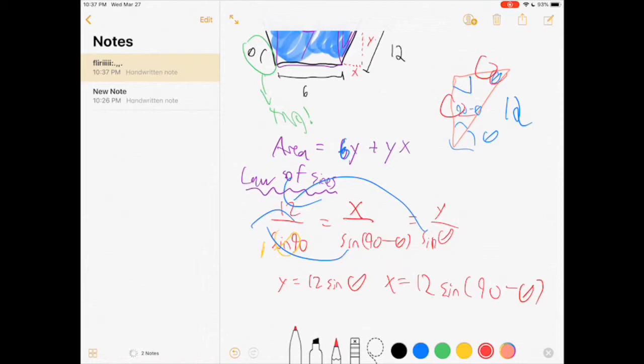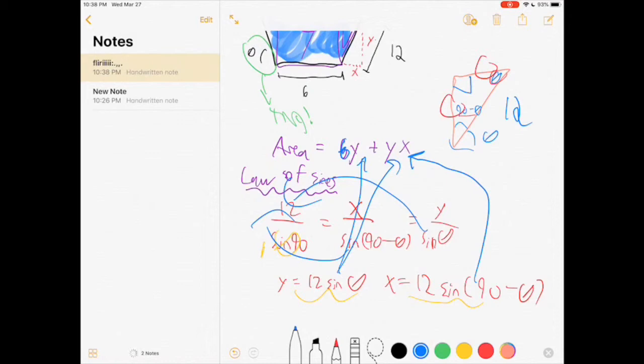Let's go in and plug those back into this equation. Going down, we are plugging this into the equation. Green seems like a nice color. 6 times 12 sine theta plus y, 12 sine theta times x, 12 sine 90 minus theta.